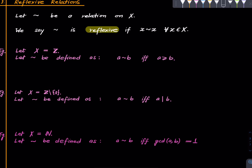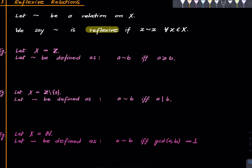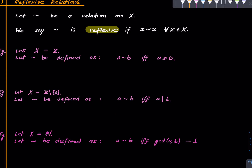For a non-example, suppose X is the set of all natural numbers and define a tilde b if and only if they are relatively prime — meaning a and b have no non-trivial common divisors greater than one. This is non-reflexive: pick 7; the GCD of 7 and 7 is 7, so there is a common prime factor and 7 is not related to itself. In fact, any integer greater than one fails to be related to itself, making this highly non-reflexive.